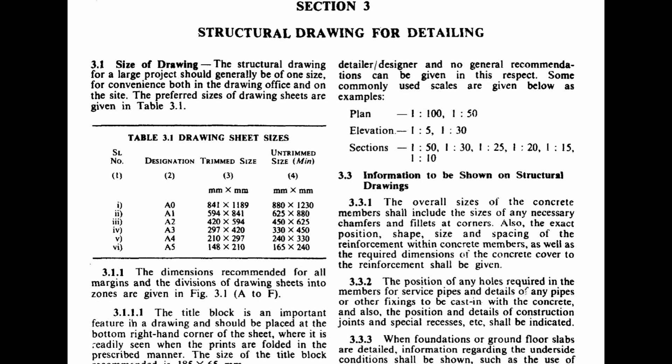Section 3 covers structural drawing for detailing. In this section we mainly discuss how we need to make the drawing — the standard dimensions of the drawing sheet, what formats we have, and how we need to make the arrangements. If we make the plan, section, and section details, we will have the notes and key plan, and everything needs to be arranged properly. Section 3.1 is about the size of drawing: the structural drawing for a large project should generally be of one size for convenience both in the drawing office and on site.